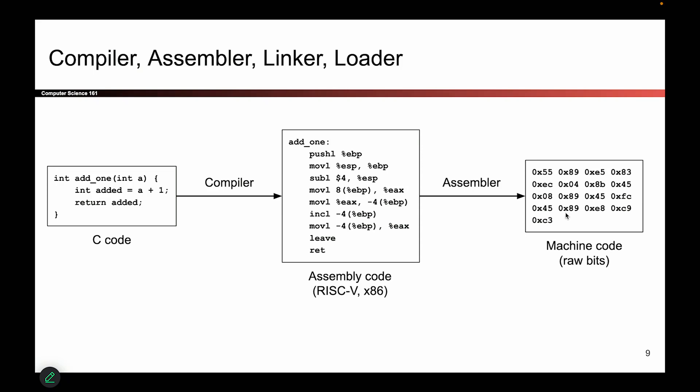Machine code is all raw bits, ones and zeros, which I've notated here in hexadecimal as shorthand. But this is just a bunch of ones and zeros, and they represent the same thing as this assembly code.